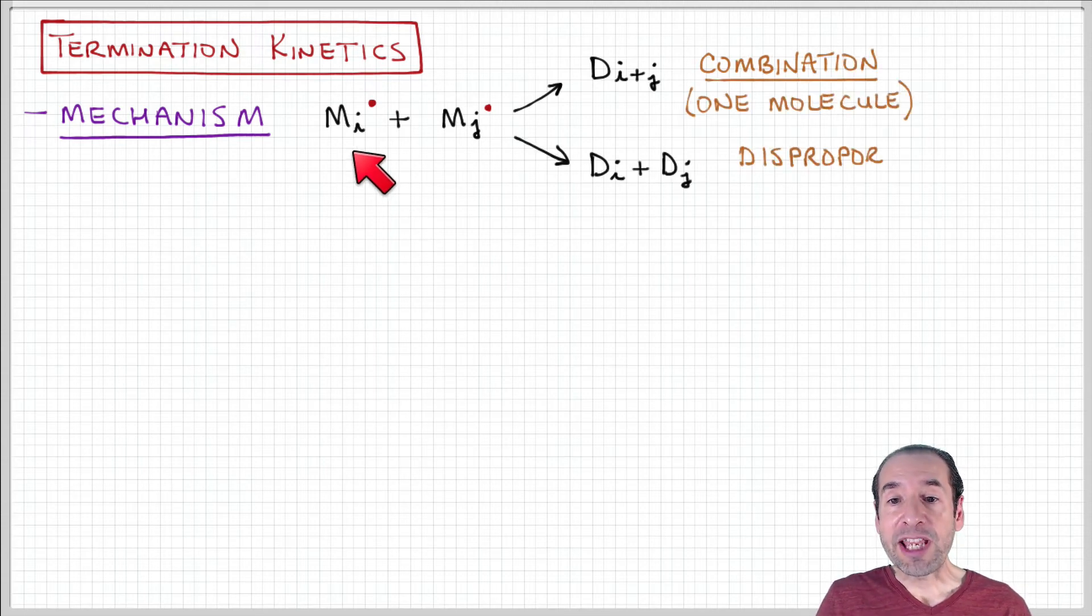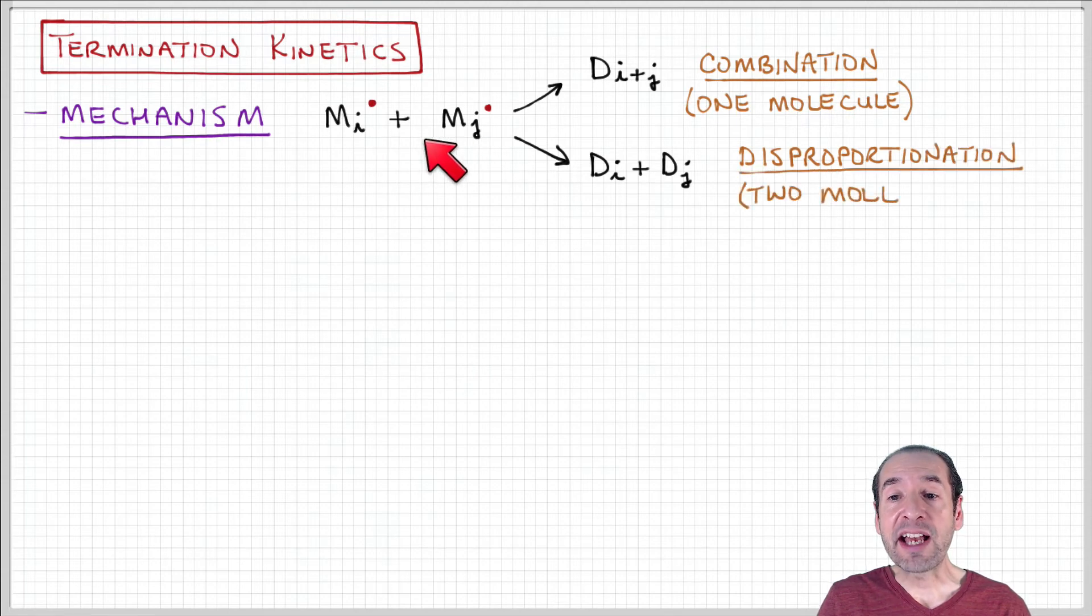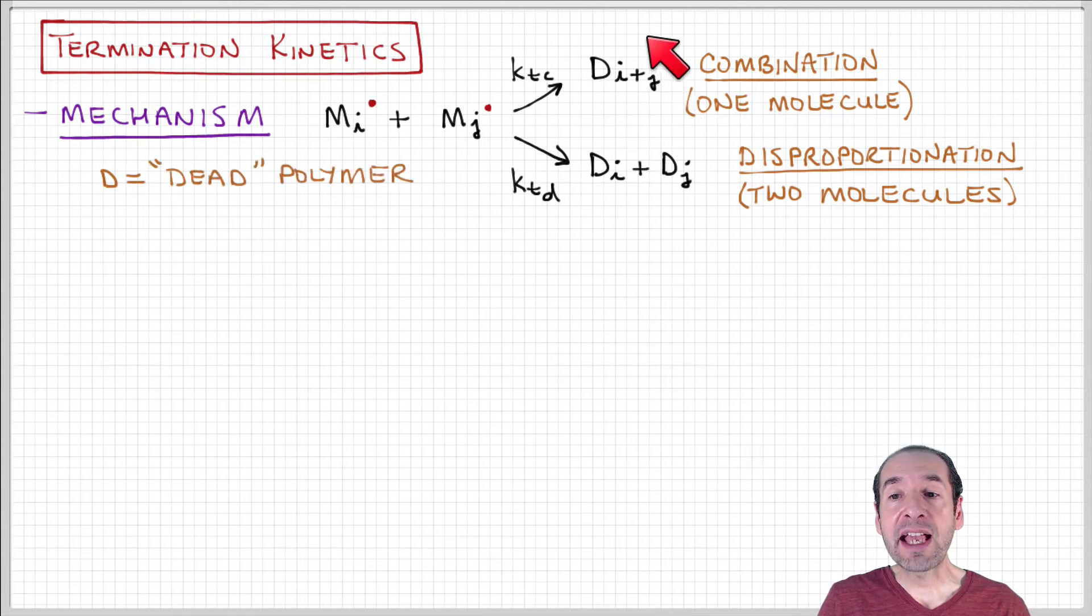If we have two active chains of length I and J, those two chains can combine to form one dead chain that has a total length equal to the sum of chain I and chain J. This is denoted D sub I plus J, where D indicates dead polymer as opposed to active polymer. This no longer contains a radical group, so it's no longer actively growing.